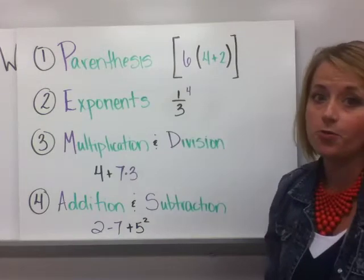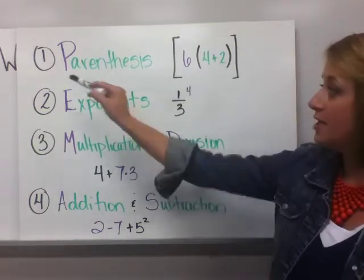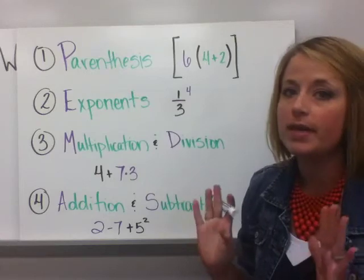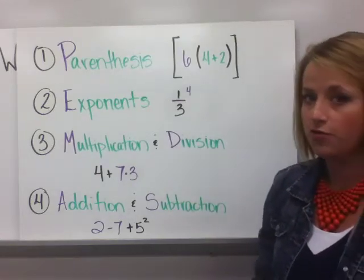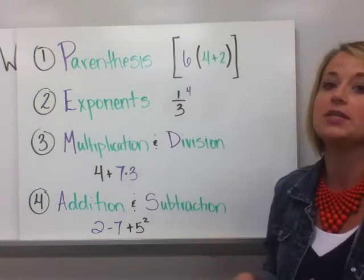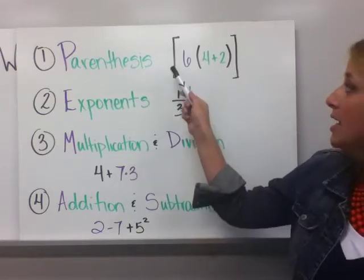There are four steps to the order of operations. First is parentheses and we say parentheses but we're meaning any kind of grouping symbols. You've graduated where you're beyond parentheses. You're seeing different kinds of brackets like there is here.